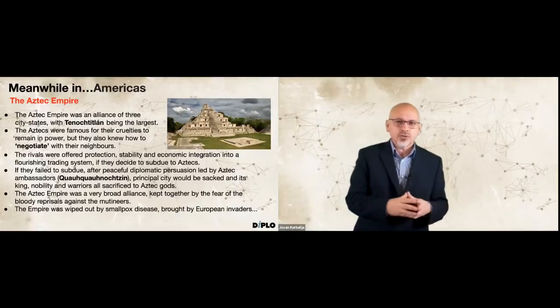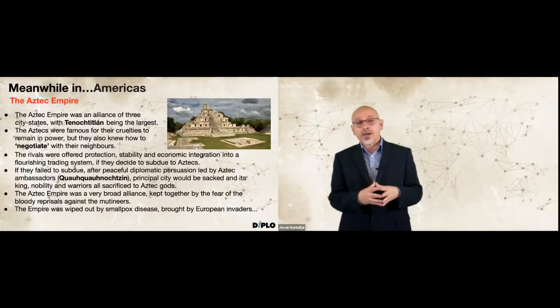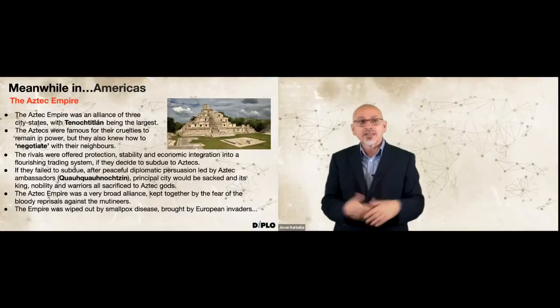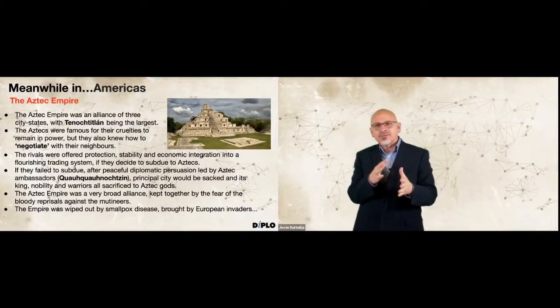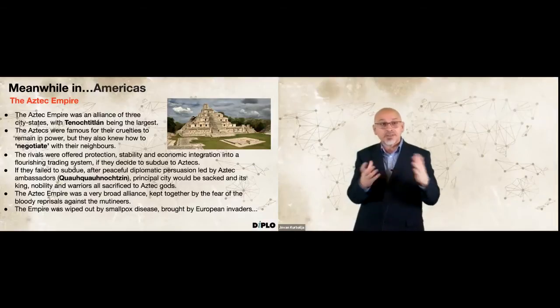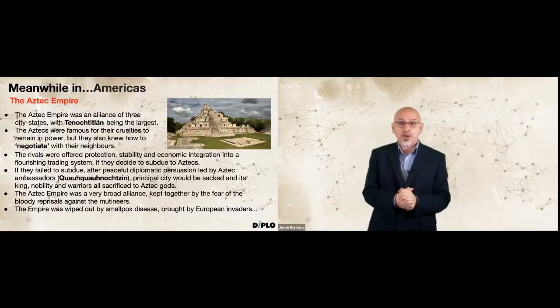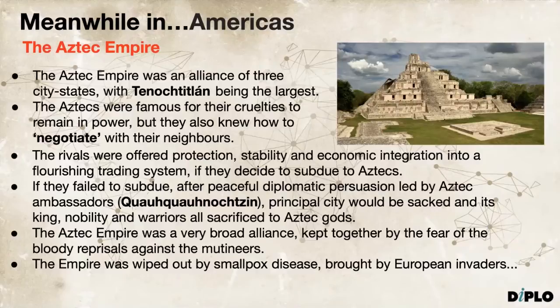Let's see what has been happening outside European space. We move now towards the Aztec Empire. It was developed as a shifting and fragile empire of three principal city-states. The largest and most powerful among the three was Tenochtitlan. The Aztec Triple Alliance exerted tremendous power over central Mexico for just a hundred years, before falling to Spanish conquistadors led by Hernán Cortés.